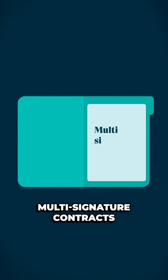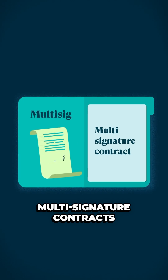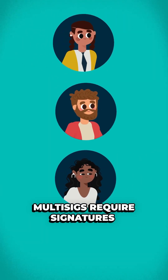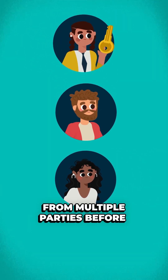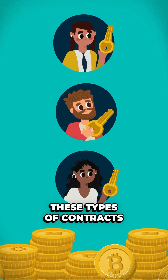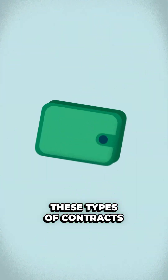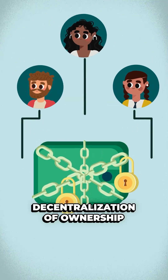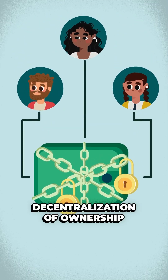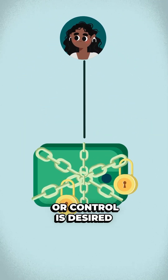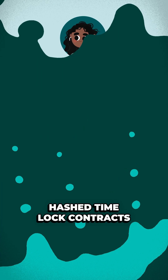Now let's move on to multi-signature contracts. Multi-sigs require signatures from multiple parties before a transaction can happen. These types of contracts are used when a wallet with extra security or decentralization of ownership or control is desired.